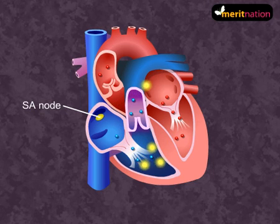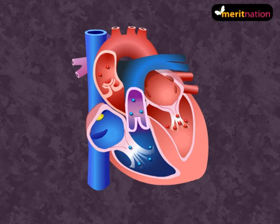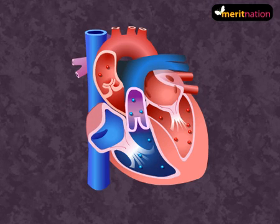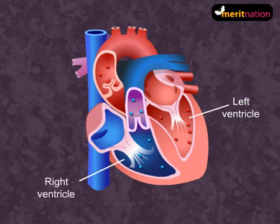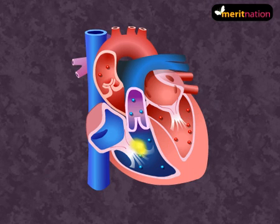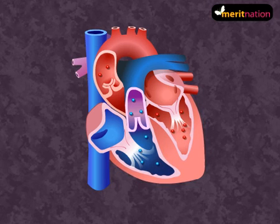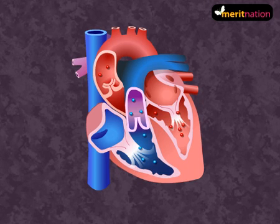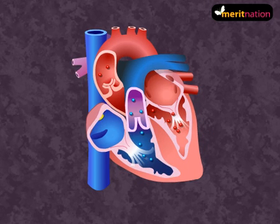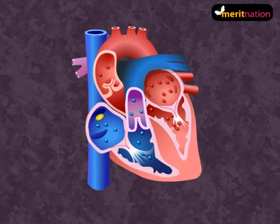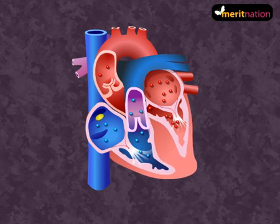Atrial systole is initiated when the SA node sends out an electric signal. During atrial systole, the atria undergo contraction which forcefully passes the blood into the ventricles through the tricuspid and the bicuspid valves. Ventricular systole begins when the ventricles are filled with blood. The AV node picks up the signal and conducts it throughout the ventricles, stimulating ventricular contraction. As ventricular contraction increases, the ventricular pressure causes the closure of the AV valves.